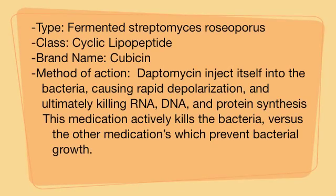Daptomycin is made by fermenting Streptomyces roseosporus, a bacterium, which produces what is called a lipopeptide. The brand name is Cubicin. Daptomycin actually injects itself into the bacteria, causing depolarization, which kills the RNA, DNA, and protein synthesis. Unlike the other medications, Daptomycin actively kills the bacteria rather than simply preventing it from growing and spreading.